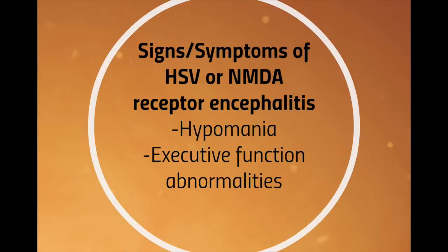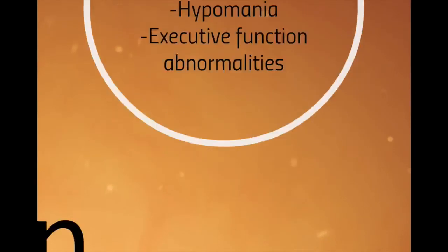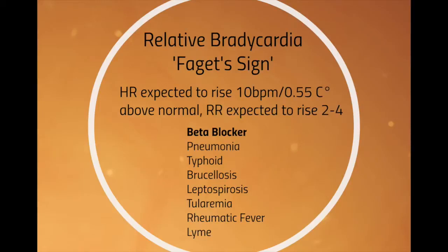At this point, note something called Faget sign — F-A-G-E-T. That is the change in heart rate and respiratory rate with fever. For every degree Fahrenheit, or 0.553 degrees Celsius, that body temperature rises, heart rate should go up by 10 and respiratory rate should go up by two to four breaths a minute. In the old days, relative bradycardia — a heart rate lower than expected for the degree of fever — was called Faget sign, suggesting some sort of intracellular pathogen.